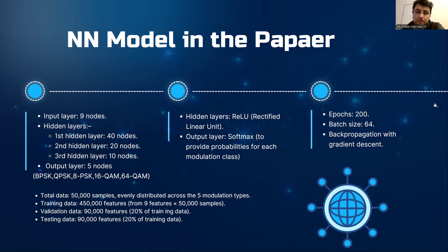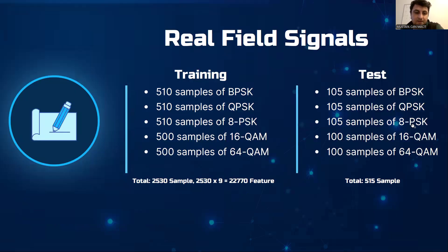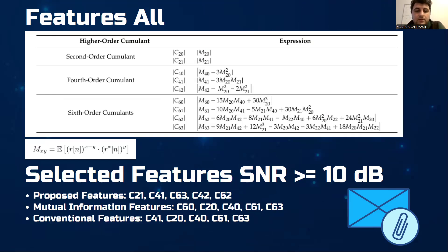The model was trained for 200 epochs with a batch size of 64, utilizing backpropagation and gradient descent for optimization. Here are all the features calculated from higher-order cumulants. In the feature selection method part of the paper, five specific features are chosen for each method. For my dataset, SNR is greater than 10 dB, so I chose these higher-order cumulants for training and testing.